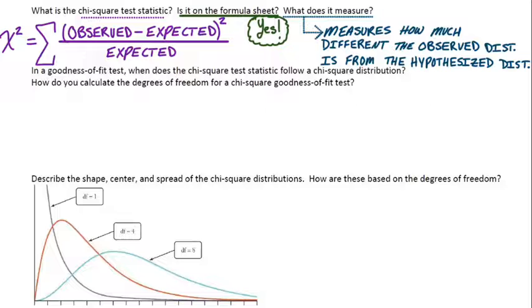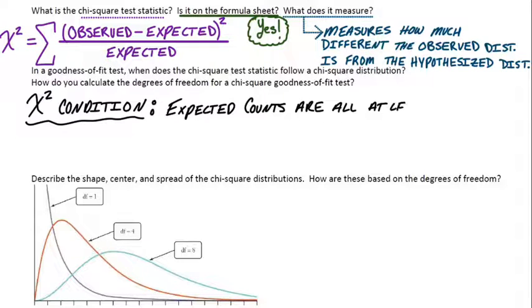In a goodness-of-fit test, when does the chi-square test statistic actually follow a chi-square distribution? How do you calculate the degrees of freedom for a chi-square goodness-of-fit test? We do have a chi-square condition, kind of like how we used to have a normality condition. In this case, we want to see that the expected counts are all at least five. All the expected counts are greater than or equal to five. That's our chi-square condition. So as long as this condition's met, our shape will follow that chi-square shape.